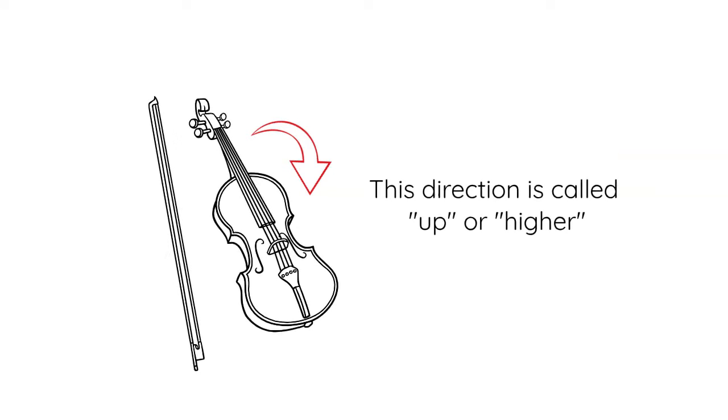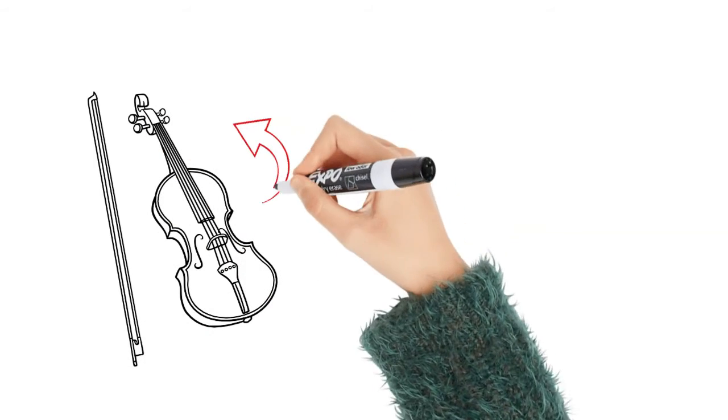Higher simply means towards the bridge, the direction that actually makes the pitches higher. And lower is the opposite direction, towards the pegs.